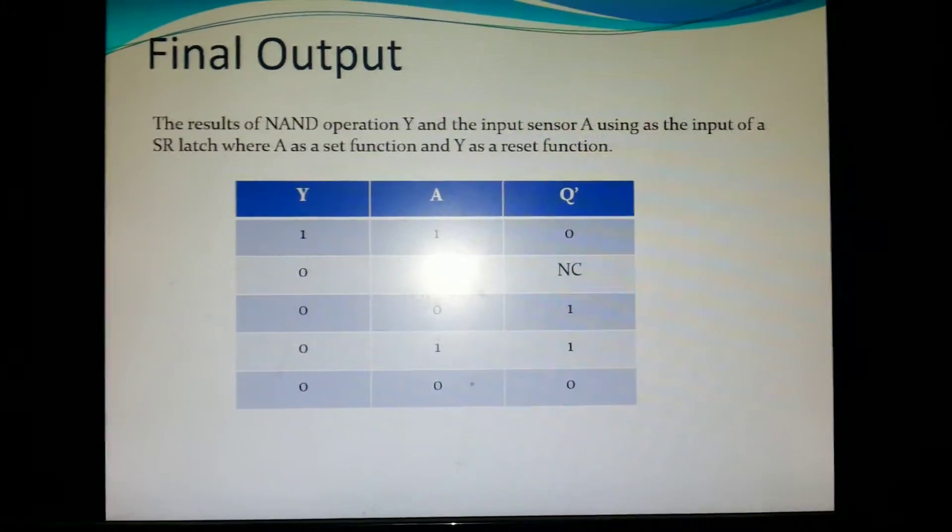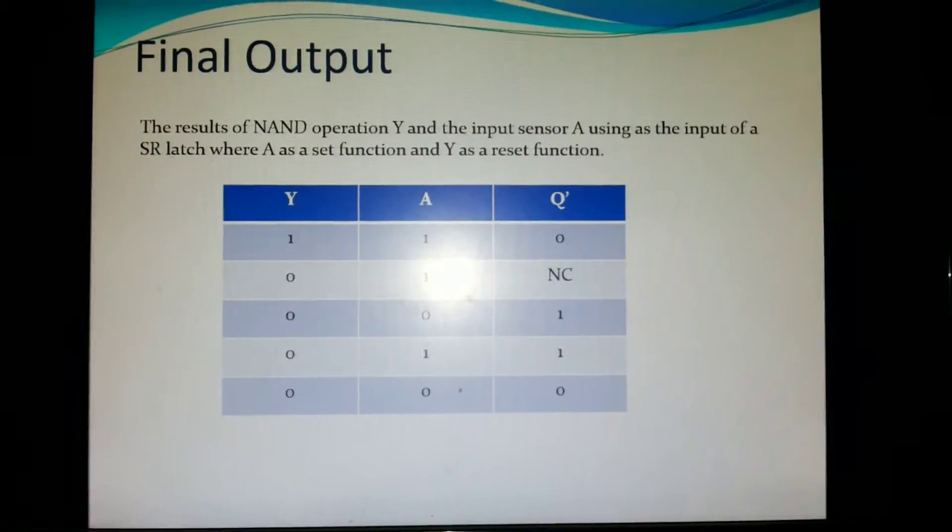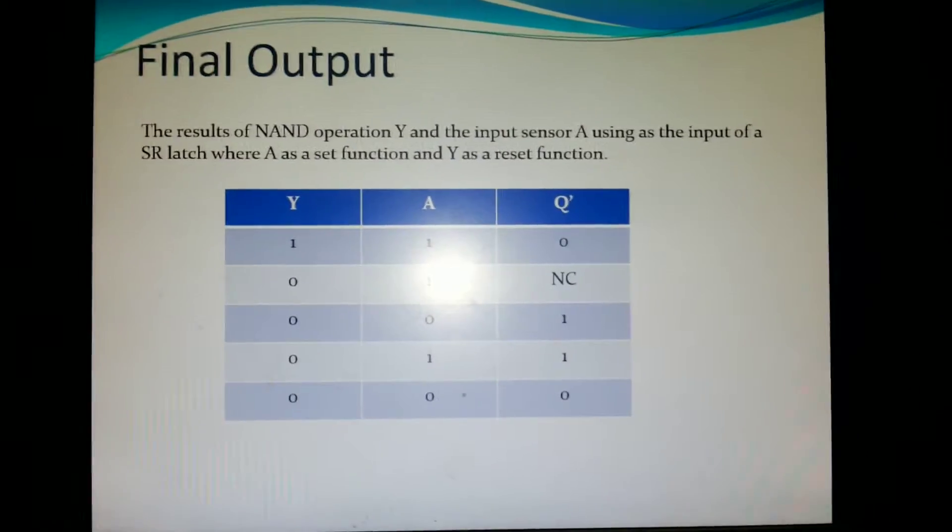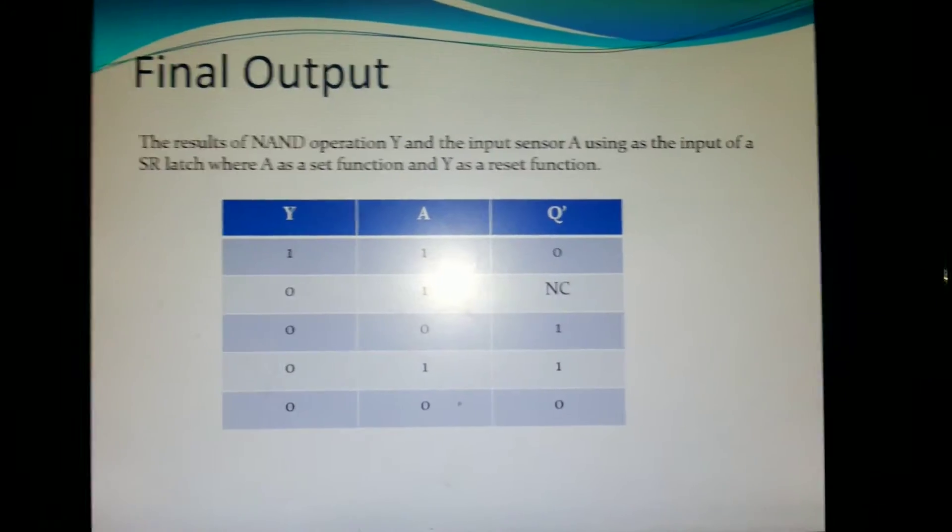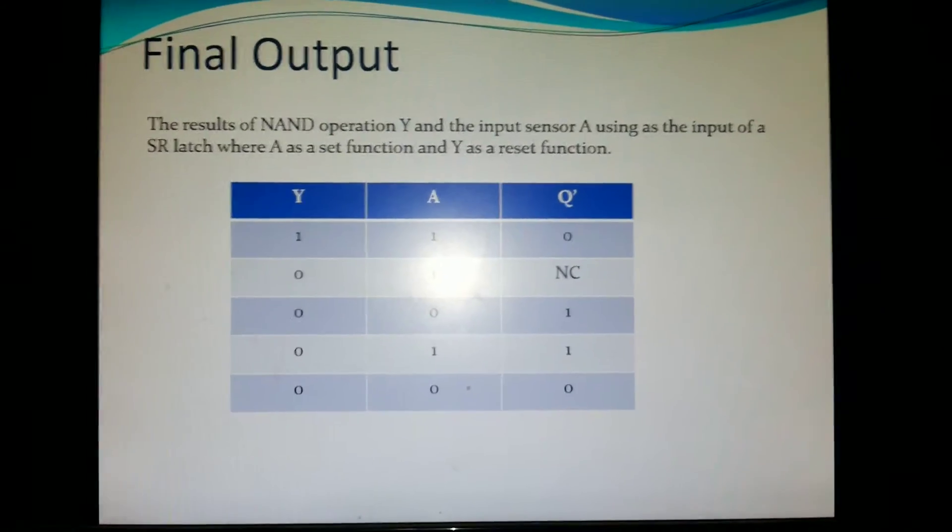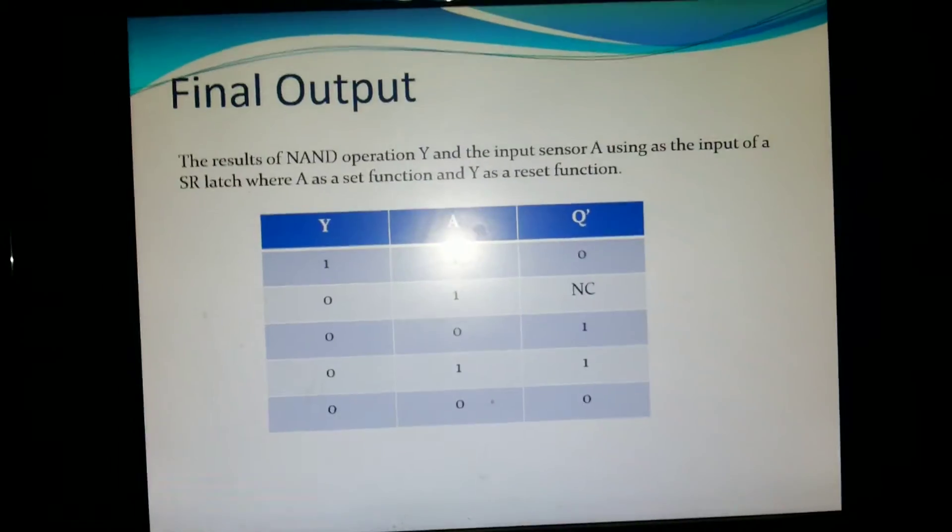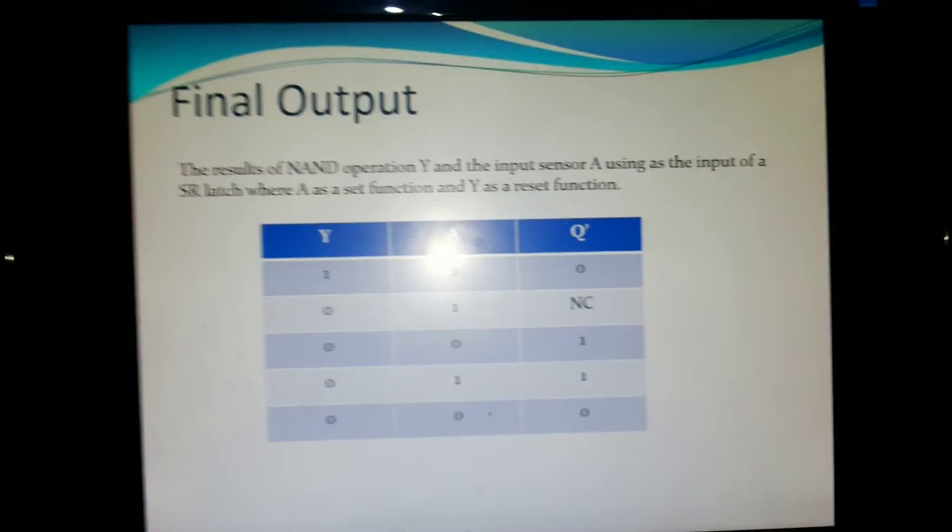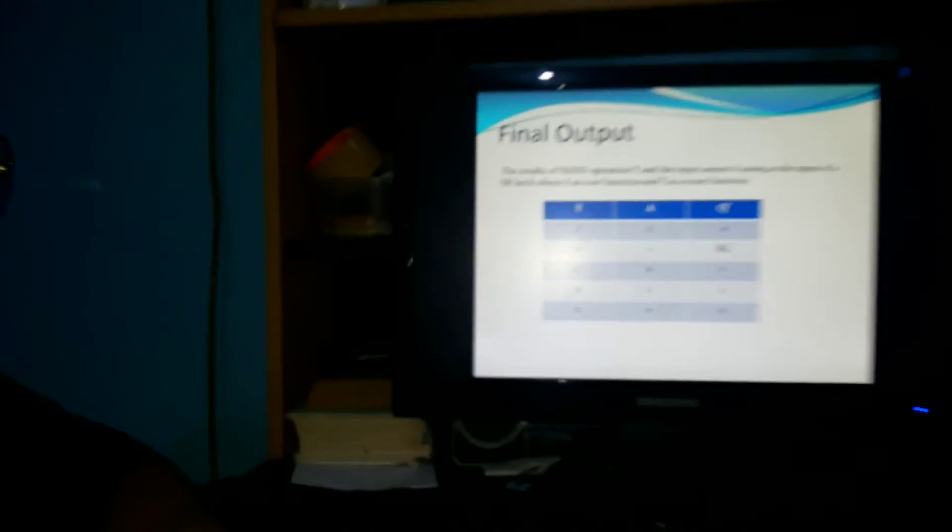When Y and A is 1, 1, Q bar is 0. When Y and A is 0, 1, Q bar gives us no change. When Y and A is 0, 0, Q bar is 1. When Y and A is 0, 1, Q bar is 1. And when Y and A is 0, 0, Q bar gives us 0. Thank you.